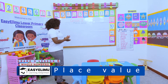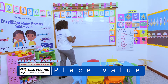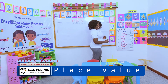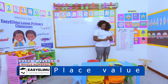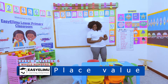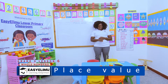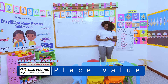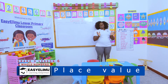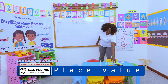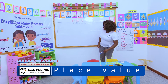Place value! Now we have done place value using the ones — using the sticks, bundles of sticks. We have done using the place value chart for tens, then the abacus. Now we have been doing only the place value for ones and tens.